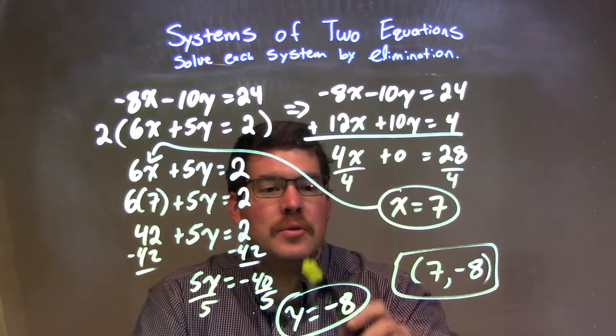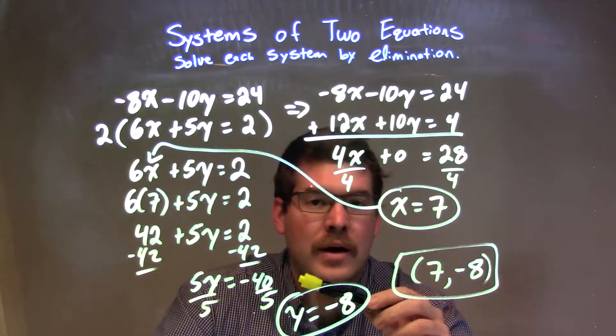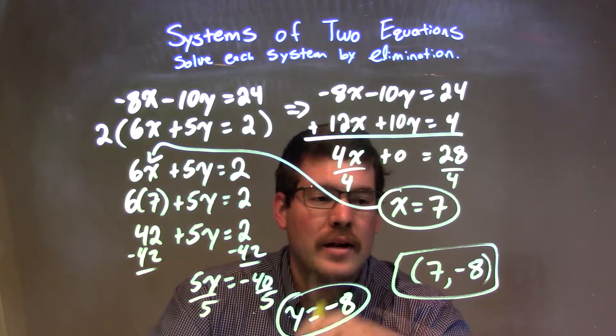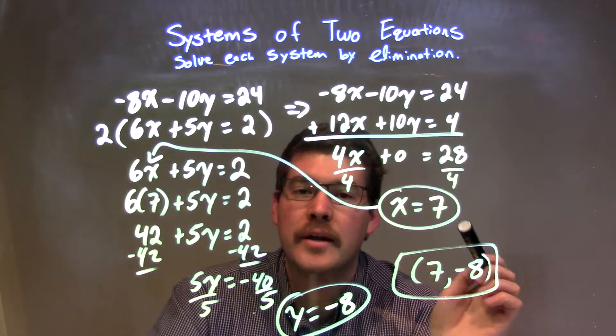From there, I have my two values, x and y, so I can write it as a coordinate point. That's proper to write this. And so our final answer, again, is just (7, -8).